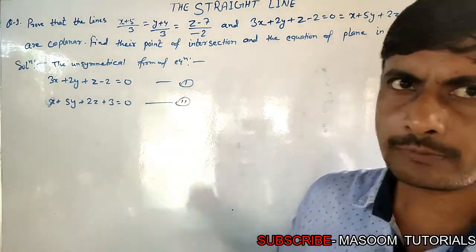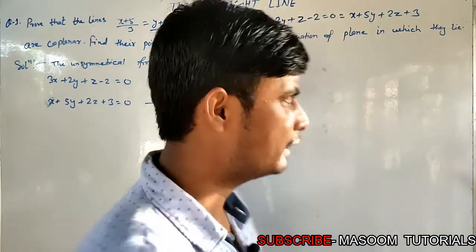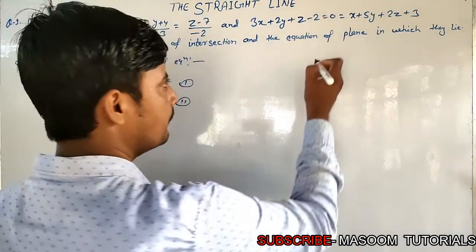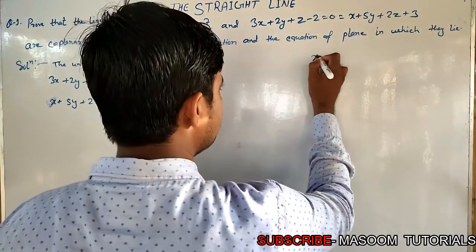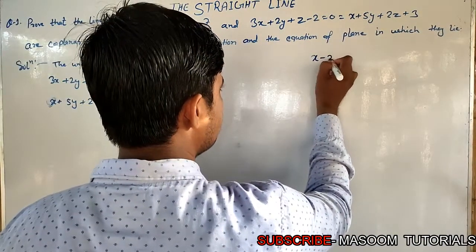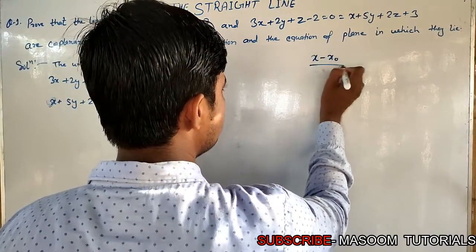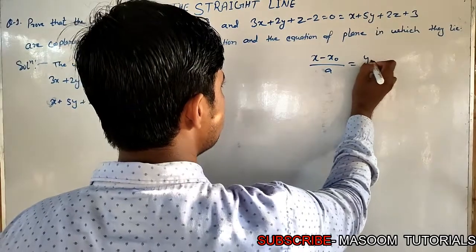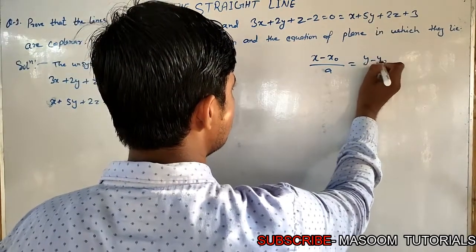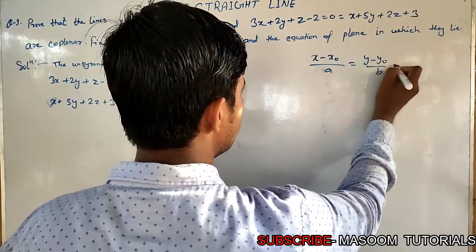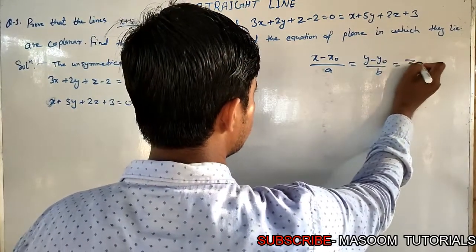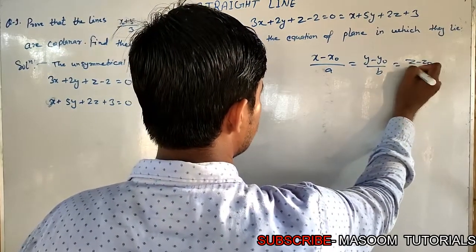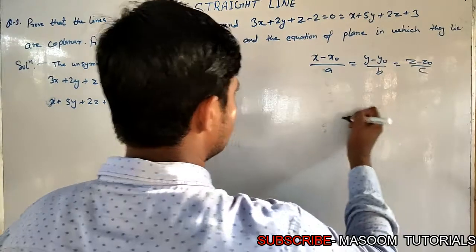This is what we call the symmetrical form. The symmetrical form is: x minus x0 by a is equal to y minus y0 by b is equal to z minus z0 by c.